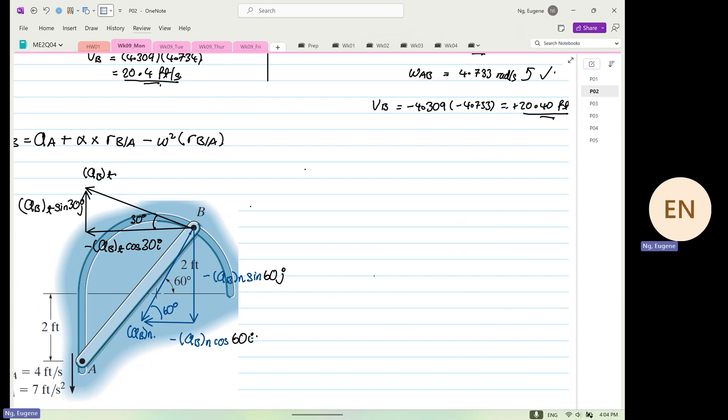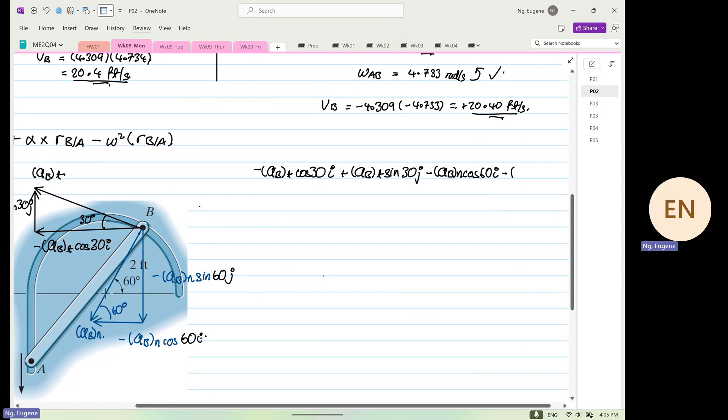So what we have is equal to minus A B T cos 30 I, then plus A B T sine 30 J. Then you have minus A B N cos 60 I, and then you have minus A B N sine 60 J.